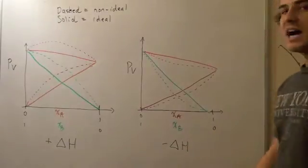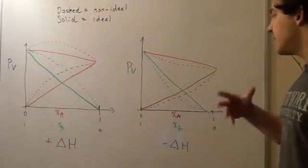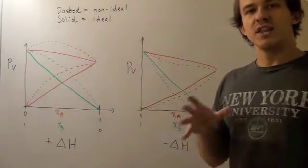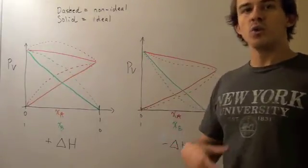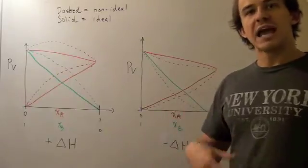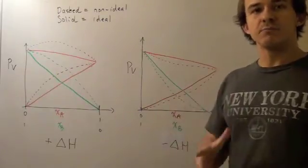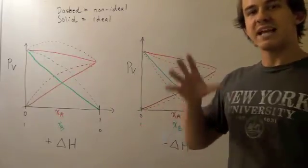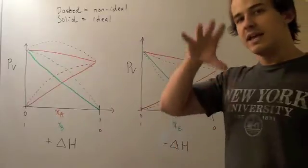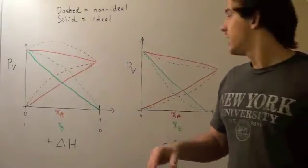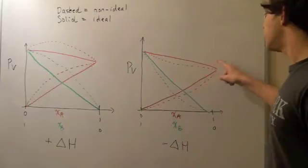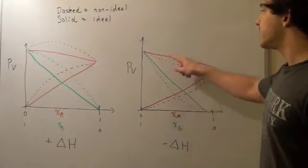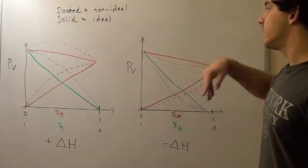In an exothermic reaction, the opposite holds. The bonds formed are stronger than the bonds broken. Therefore, the final solution will hold its molecules very tightly and will not let them go — they will be less likely to enter the gas state. Fewer gas molecules will be present in the space above, and the vapor pressure will be lower. That's why, in each exothermic situation, the curves are directed downward. If you look at the pressure at any given point, it's going to be lower than the ideal pressure.